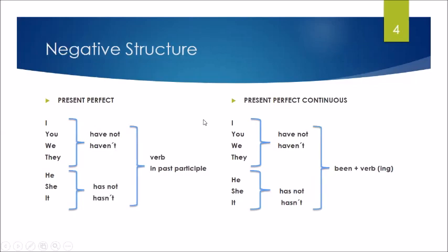To form the negative, remember that we only add the particle not after the auxiliary verb have or has in that order. We have haven't or hasn't in contraction. As you can see in the slide, we use the same contraction haven't or hasn't for the present perfect continuous.